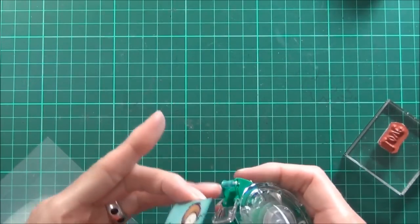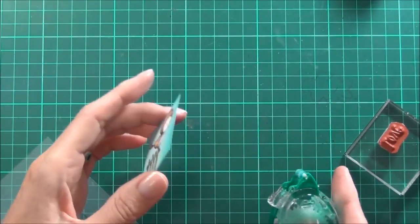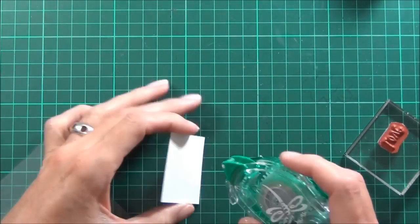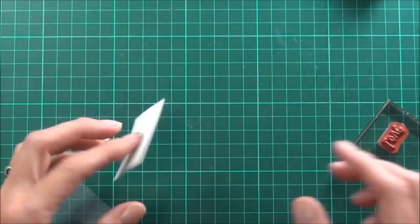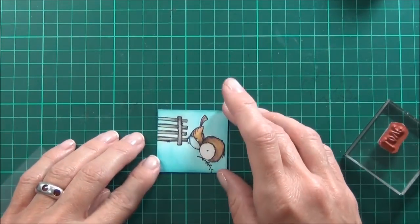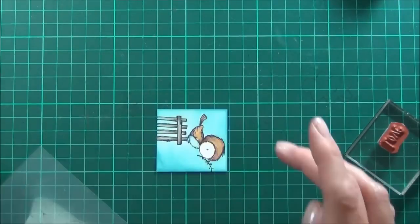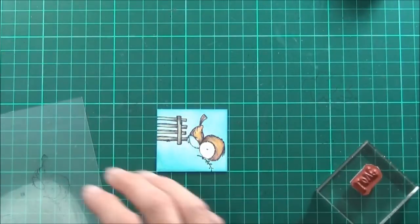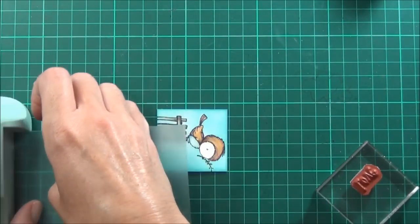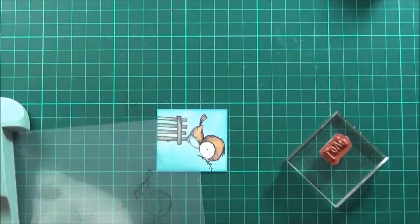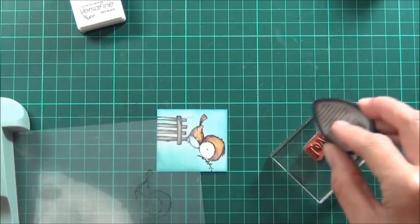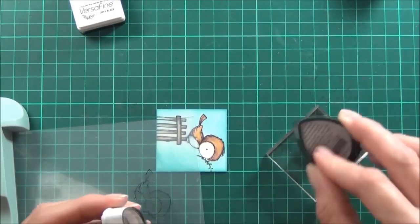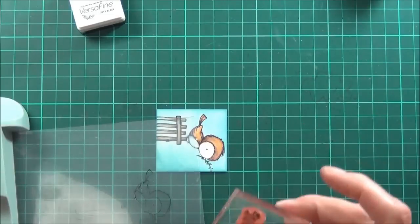I've got a sentiment that I want to use from another Stephanie Ackerman set, the Doodle Flower Sentiment set. It's another cute set, so I'll use my Stamp-a-ma-jig again and just place that where I want it. I'll use some Onyx Black ink this time. Just love the way that stamps nice and crisp. Never have too many black inks.